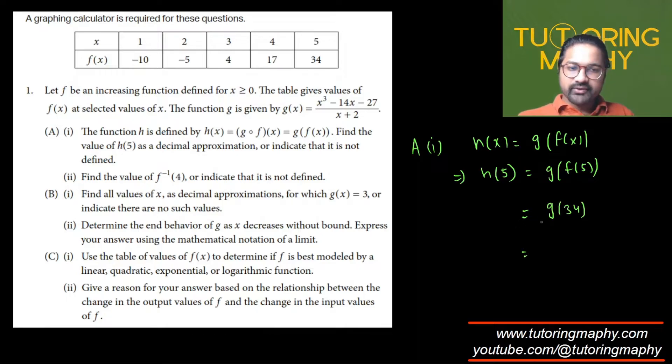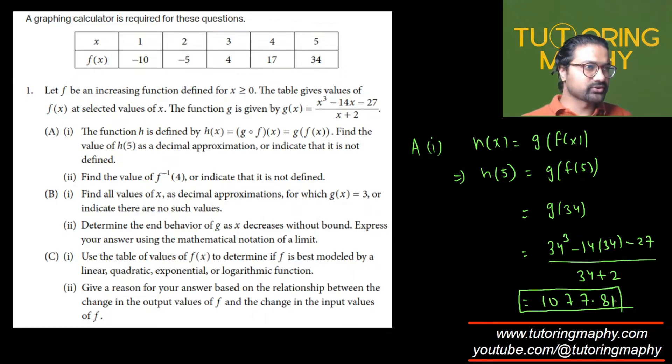What is G(34)? We plug that in. G(34) is 34 cubed minus 14 times 34 minus 27 over 34 plus 2. I just replaced every x with 34 to get the answer. Using a calculator: 34 cubed minus 14 times 34 minus 27 over 36. This value comes out as 1077.81 up to two decimal places.